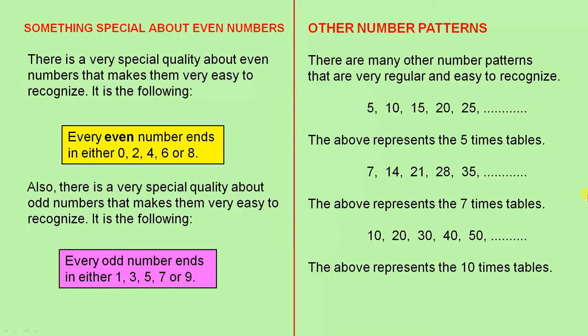There is a very special quality about even numbers that makes them very easy to recognize. It is the following: Every even number ends in either 0, 2, 4, 6 or 8. So it doesn't matter how big or small the number is. If the last digit is one of those 5, it is an even number.